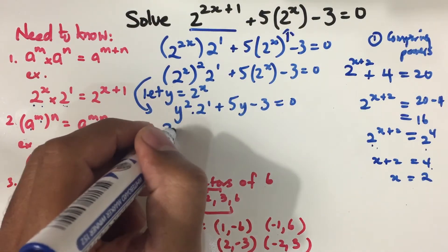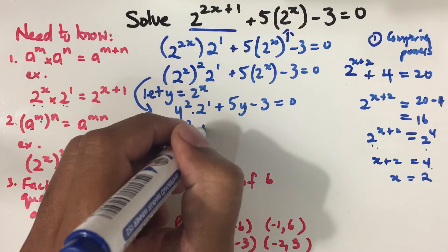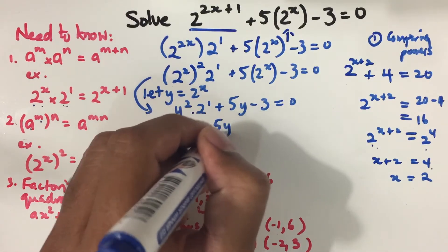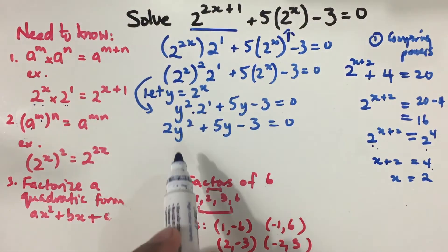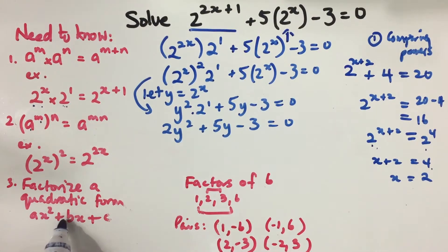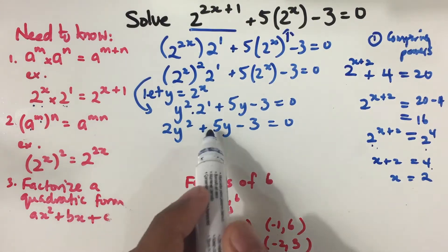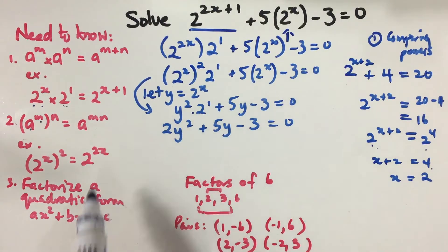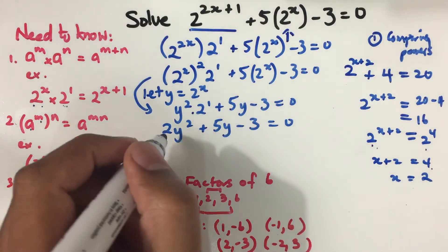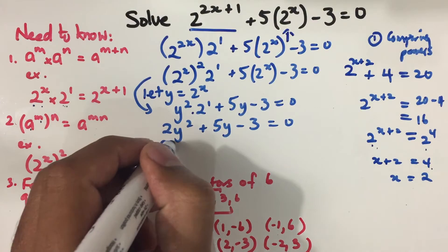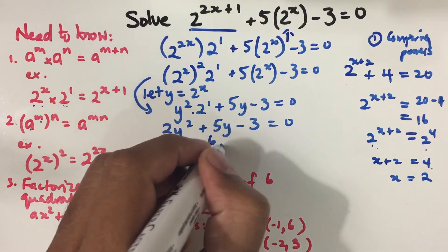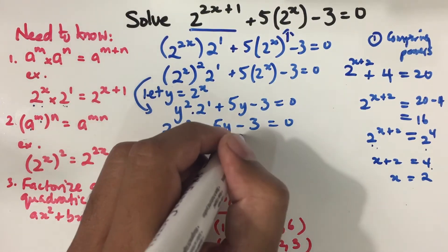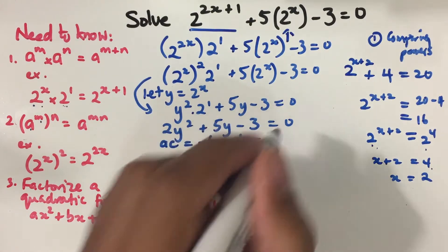With y equal to 2 to the power of x, the equation becomes y squared times 2 plus 5y minus 3 equals 0, which is 2y squared plus 5y minus 3 equals 0. This is of the form ax squared plus bx plus c, where a equals 2, b equals 5, and c equals negative 3.